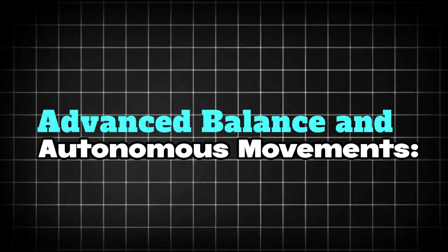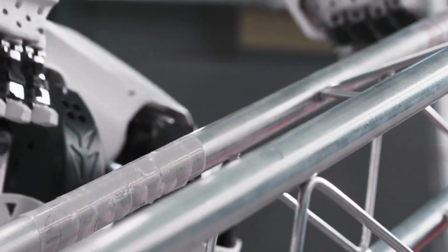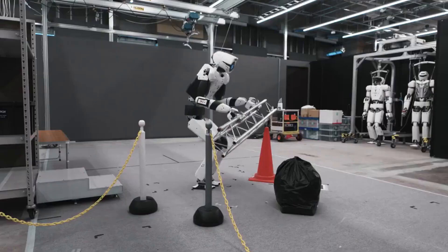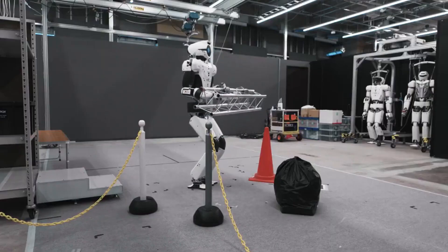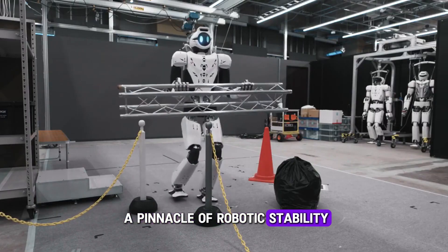Advanced balance and autonomous movements. In the world of robotics, maintaining balance and adapting to varying environmental conditions are critical challenges. Kaleido-8.0 addresses these with its advanced balance control system, which stands out as a pinnacle of robotic stability.